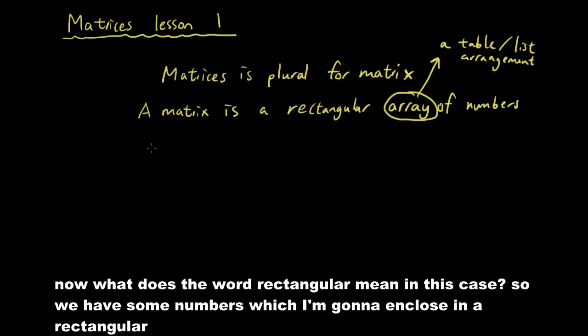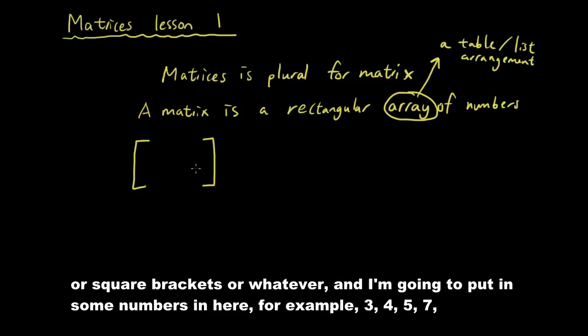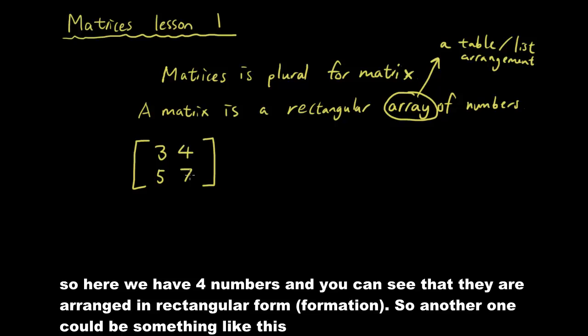Now, what does the word rectangular mean in this case? So we have some numbers, which I'm going to enclose in a rectangular bracket like so or square brackets. And I'm going to put in some numbers in here, for example, 3, 4, 5, 7. So here we have 4 numbers and you can see that they are arranged in a rectangular form.